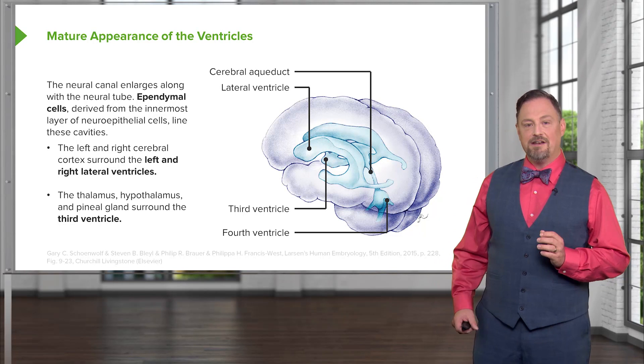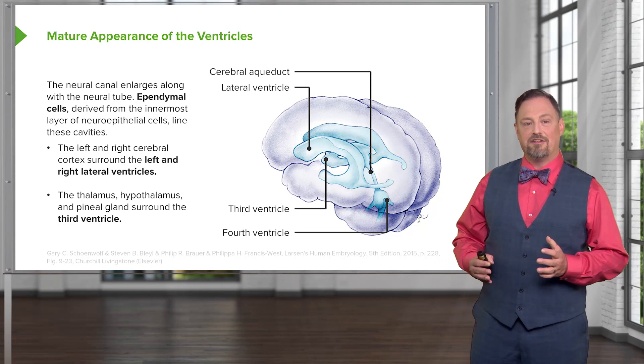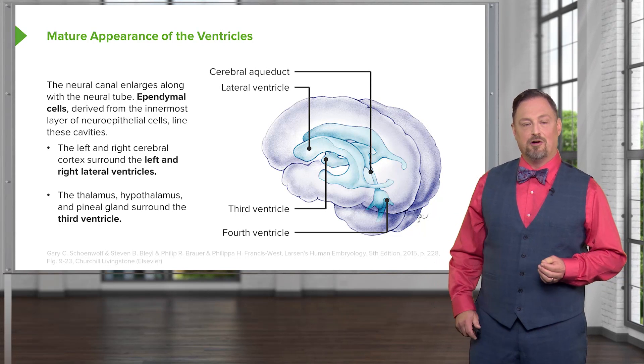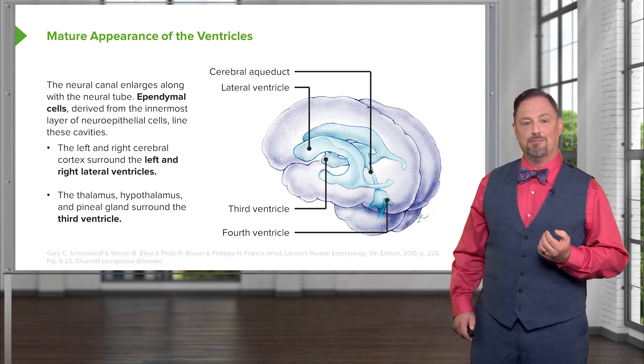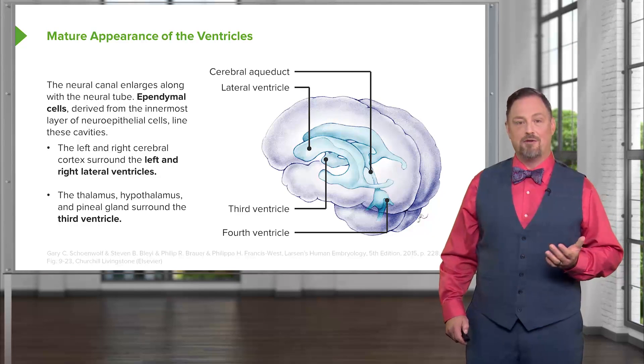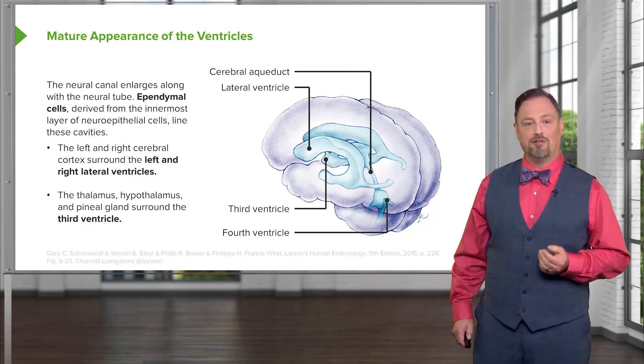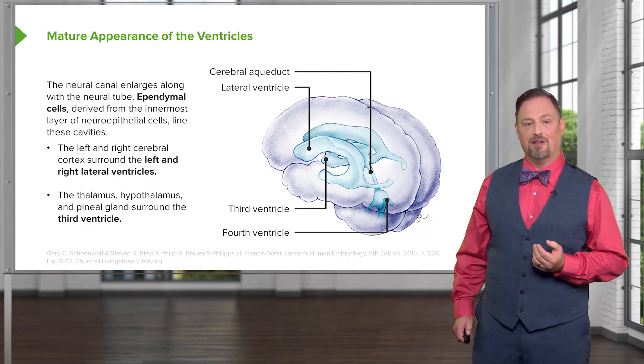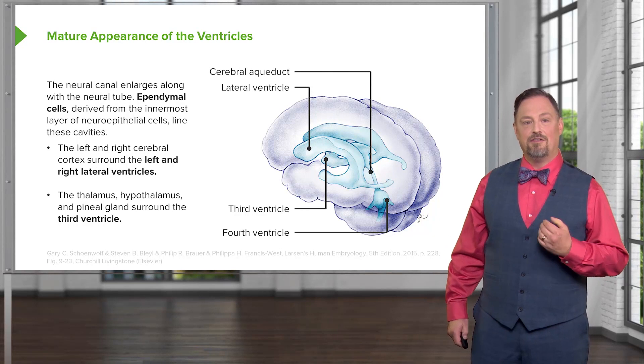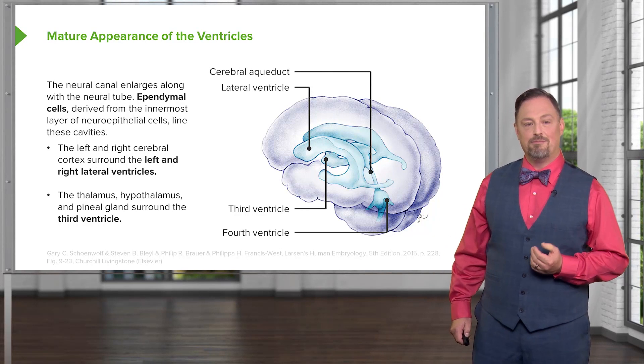The lining of these spaces is called the ependymal lining, and it's covered by ependymal cells that develop off of the neuroectoderm.